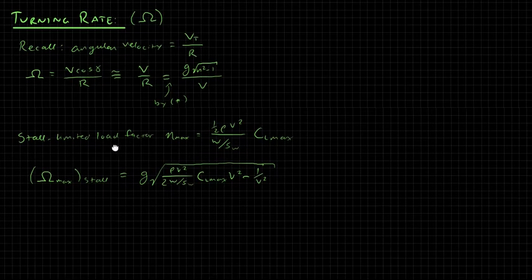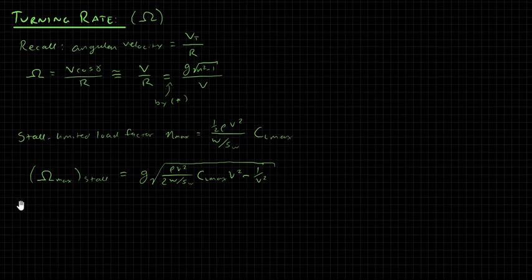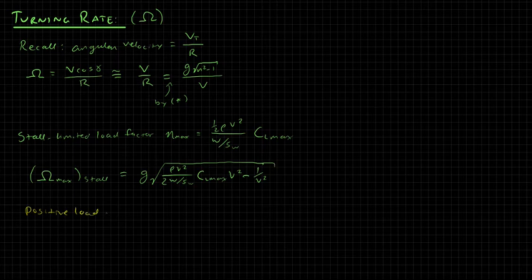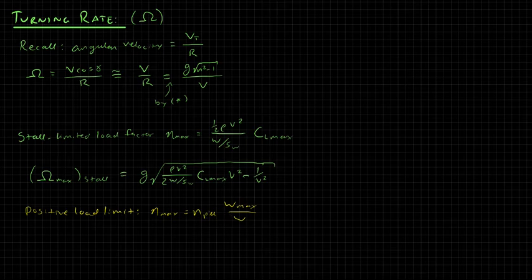We can also find a turning rate that's limited by the structure, where if we try to turn faster, we will enter structural failure. So I'm going to go to yellow, and we're going to say that the positive load limit N max equals N PLL times W max over W.